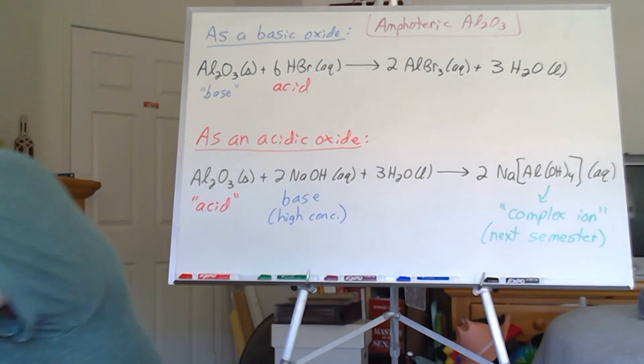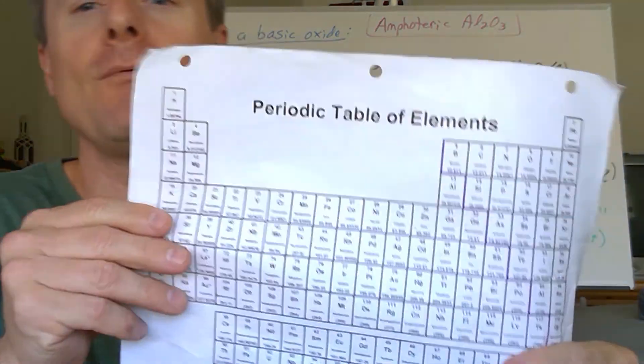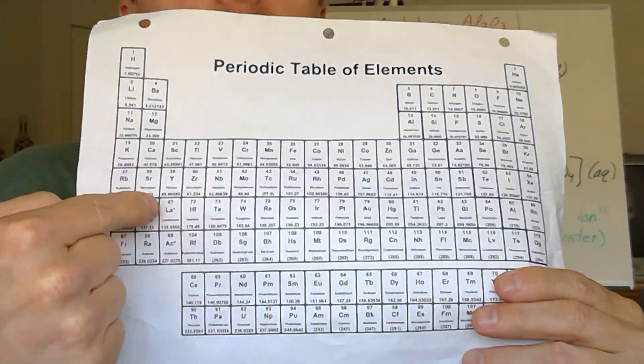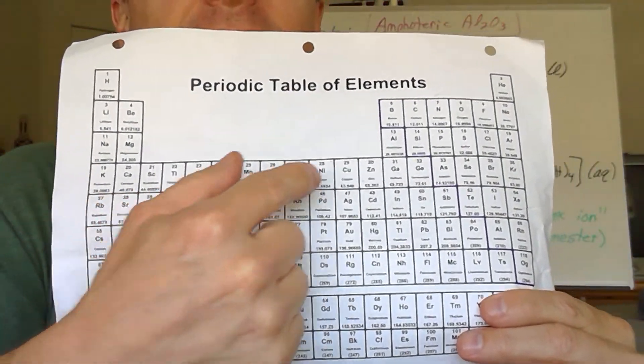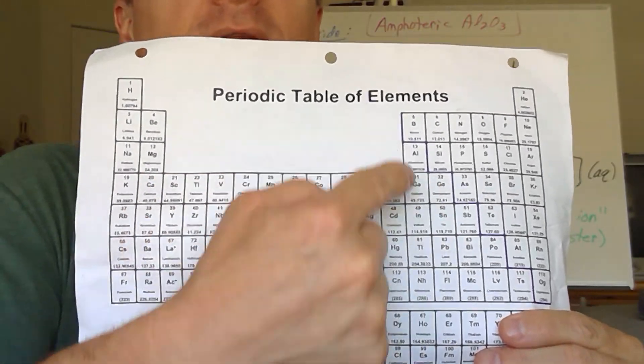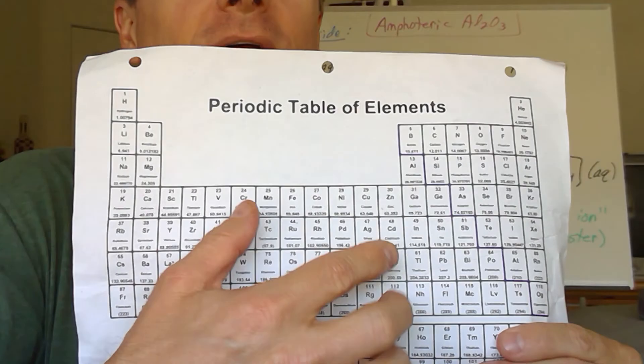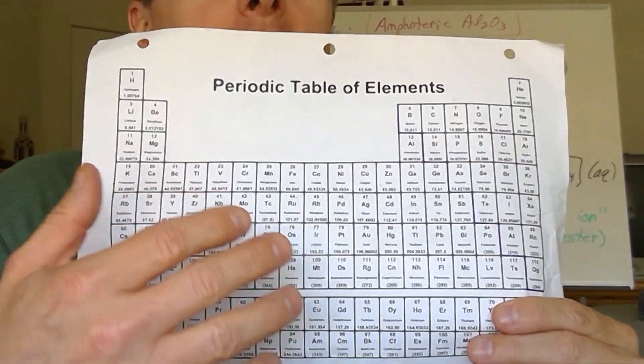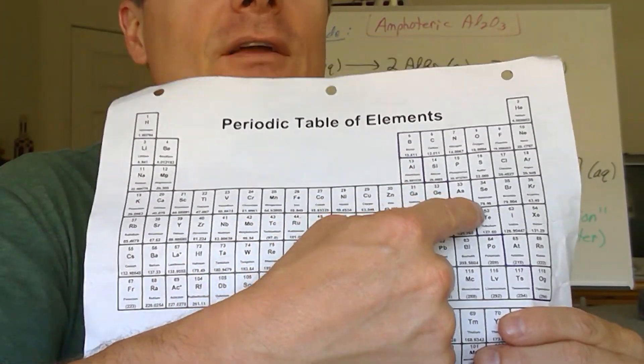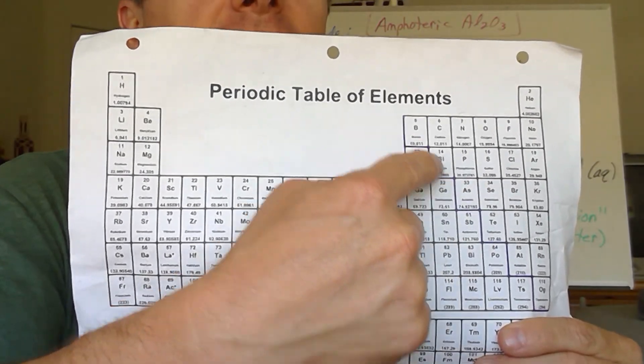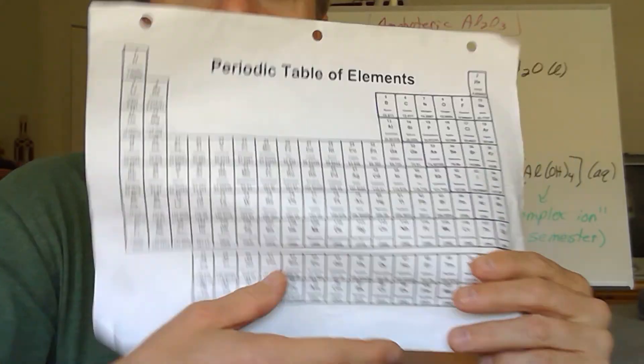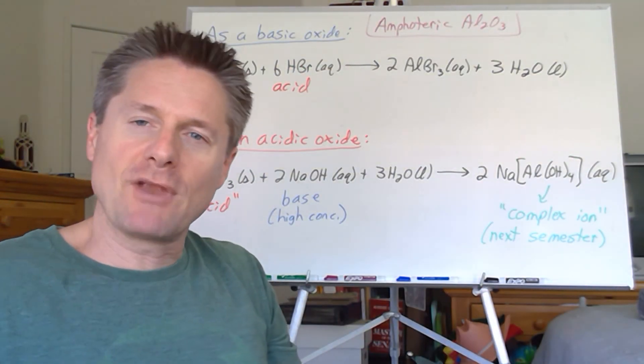So as you're moving across the periodic table in any row, you can see it goes from a basic oxide to somewhere in the middle here, amphoteric. We don't worry too much about the transition metals for this class. Let's just think about main group elements. So right along, especially along these metalloids, you get these amphoteric species and then the acidic oxides. Pretty straightforward stuff.